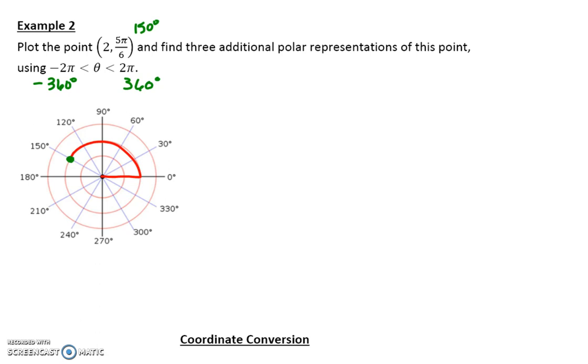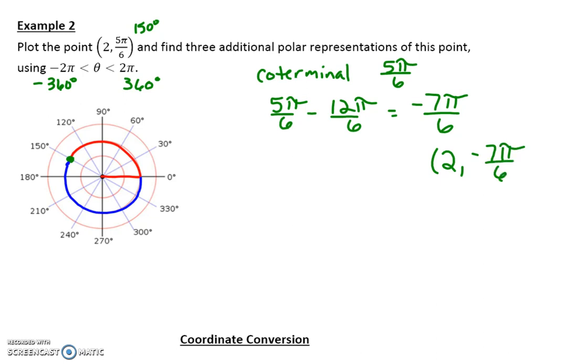Well, there are other ways we could graph that. We could first look at coterminal angles for 5 pi over 6 and see which ones are in between negative 2 pi and 2 pi. So we could do 5 pi over 6 minus a full circle, which would be 12 pi over 6, which is negative 7 pi over 6. We get negative 7 pi over 6. And if you want to look at that on the graph, you would come out to your 2. And then you would go negative 7 pi over 6. And that would land you there. So that is one of your coordinates, 2, negative 7 pi over 6.